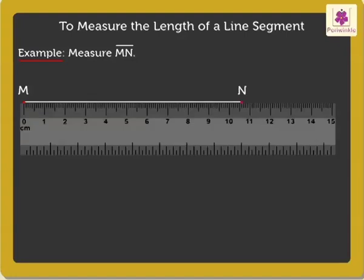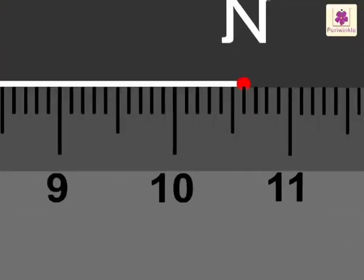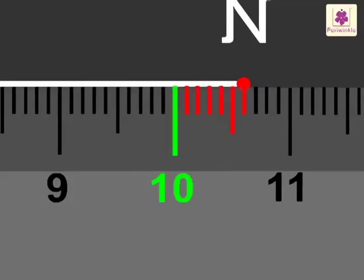Keep 0 of the ruler at point M. We count forward from 0 to 15. Look, point N of the segment coincides with the sixth division after 10 centimeters on the ruler.